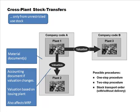Within company code A, moving from plant to plant, depending on whether you do one step or two step, it will create either one material document or two material documents. One material document if it's one step, but that document will have two items. Otherwise it could be two material documents, and if valuation changes there will be an accounting document.